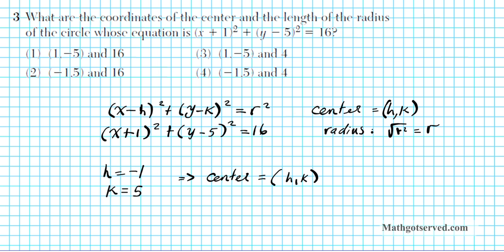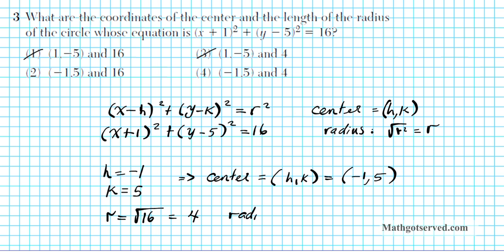Do not forget to take the opposite — you don't just extract the numbers as they are. So the center is (negative 1, 5), which eliminates options 1 and 3. For the radius, be careful: some might say the radius is 16, but that's incorrect. The radius is the square root of 16, which is 4. So the radius r equals 4, and our answer is option number 4.